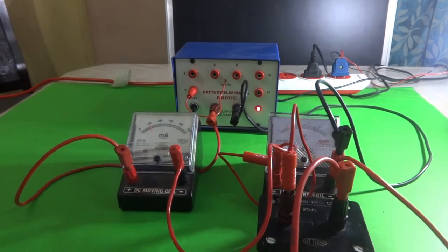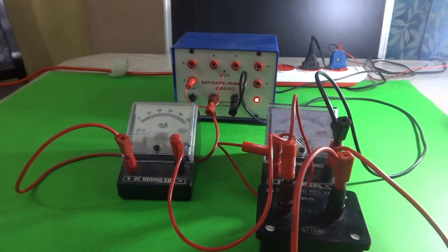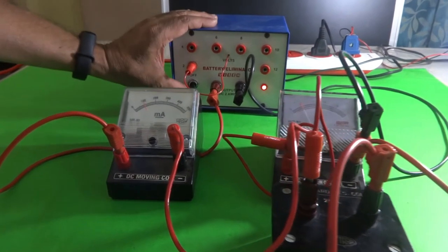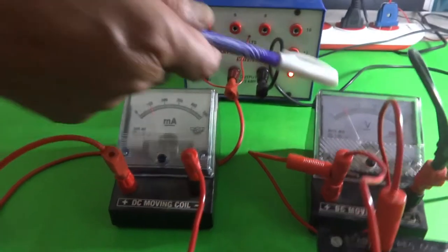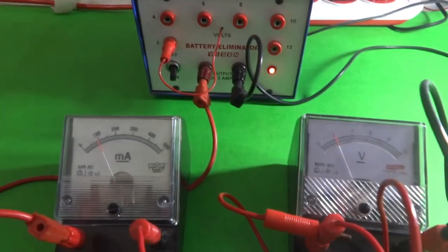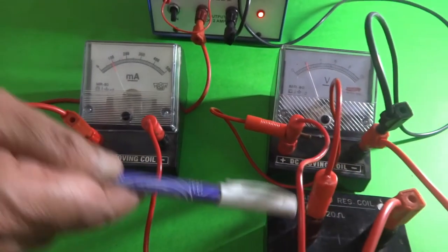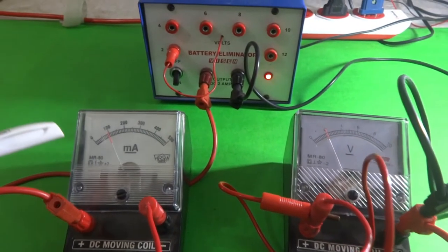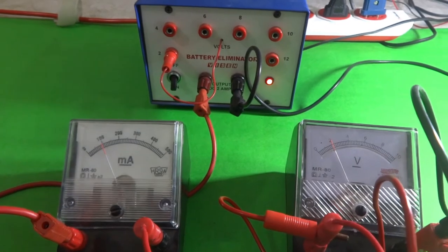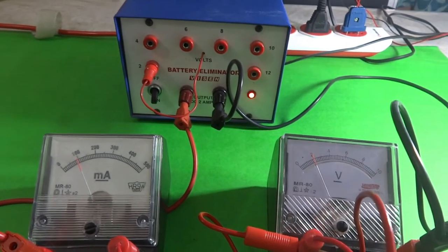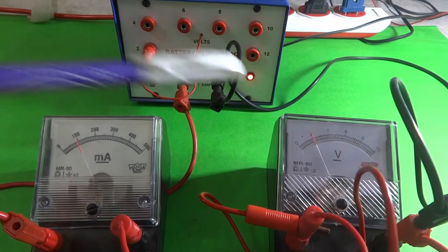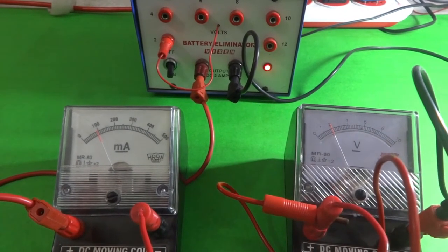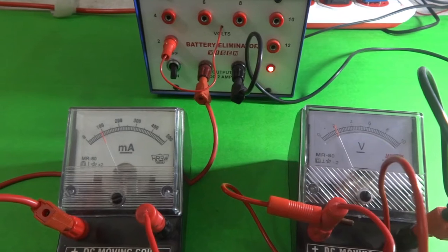To record the current reading, I have taken here one milliammeter and then to note down the reading across this coil, I have taken one voltmeter. The range of milliammeter is 0 to 500 and the range of voltmeter is 0 to 10 volts. So here we are going to take 4 readings.